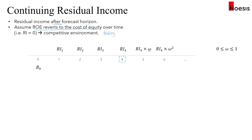To value the company, we want to summarize or present-value all this residual income. To calculate the total present value for residual income from year four onwards up to infinity, we discount all of it back to period three.